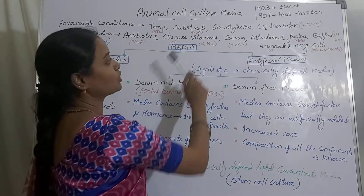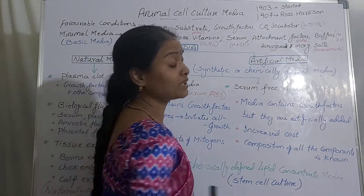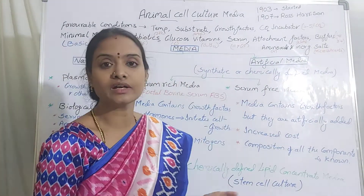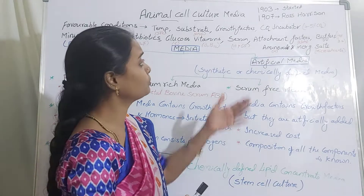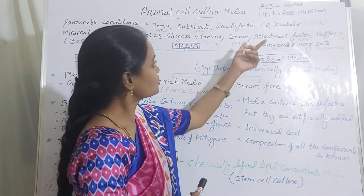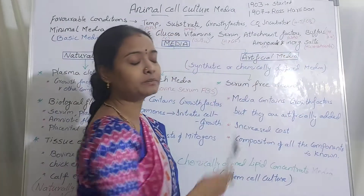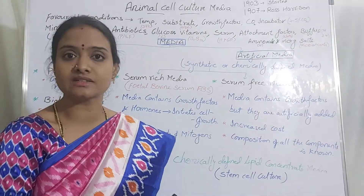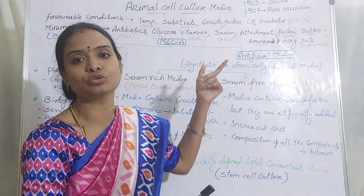You also have growth factors in order to accelerate growth. The CO2 incubator is another important requirement — animal cells require at least 4 to 5% CO2 in order to maintain pH and osmolarity conditions. Unlike microorganisms, animal cells cannot grow in a normal incubator; they require a CO2 incubator.